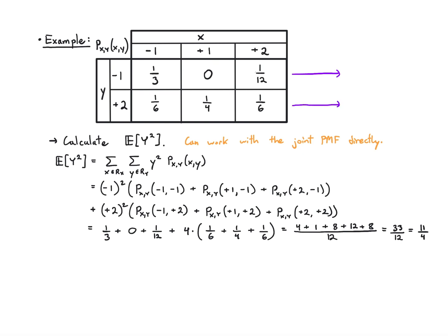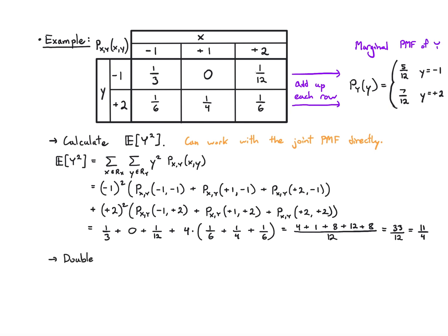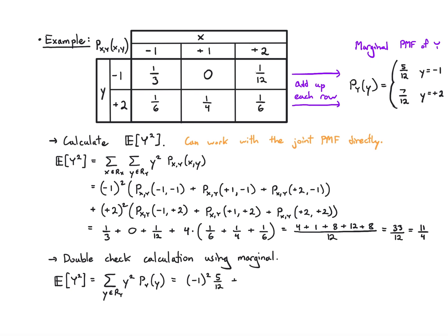I want to double-check that this makes sense. I'll first calculate the marginal PMF of y by adding up the row entries. I get that the probability that y equals minus one is five-twelfths, and that it equals plus two is seven-twelfths. Now that I have the marginal PMF of y, I can use the standard procedure for calculating E of Y squared. E of Y squared is the sum over y of y squared times the marginal PMF of y — that's minus one squared times five-twelfths plus plus two squared times seven-twelfths — which works out to five over 12 plus 28 over 12, that's 33 over 12, which matches 11 over 4.